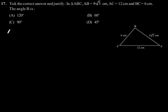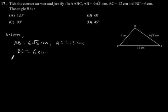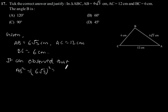Now, as it is given in the question that AB is equal to 6 root 3 cm, AC is equal to 12 cm, and BC is equal to 6 cm. Now, it can be observed that AB square is equal to 6 root 3 whole square, which is equal to 36 into 3, which gives 108.